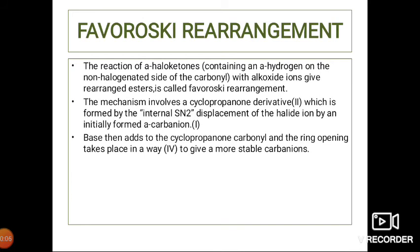Today we will learn Favoroskii rearrangement. The reaction of alpha-halo ketones containing an alpha hydrogen on the non-halogenated side of the carbonyl with alkoxide ions gives a rearranged ester. Favoroskii rearrangement is similar to Stevens rearrangement, Neber rearrangement, and Wittig rearrangement because all four have one thing in common: it is a rearrangement to an electron-rich carbon atom.